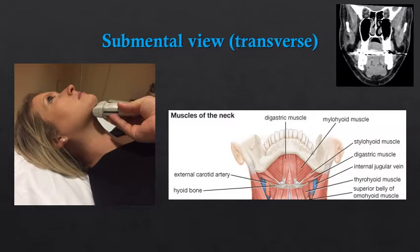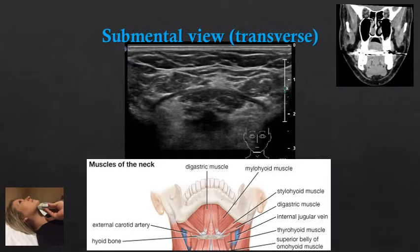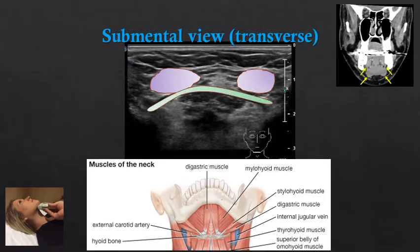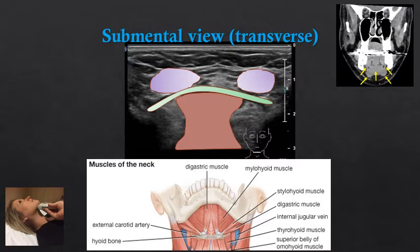When performing an ultrasound of the neck we often evaluate the submental region and the muscles in this location. The primary muscles we can easily identify are the digastric muscle, the myelohyoid muscle, and the intrinsic muscles of the tongue. Here is a transverse view of the submental region. We can see the anterior bellies of the digastric muscles, the hypoechoic myelohyoid, which is thin and lies just under the digastric muscles, and the intrinsic muscles of the tongue.